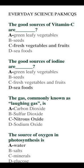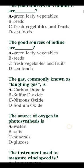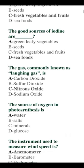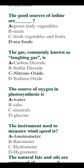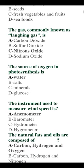Good sources of iodine are seafoods. The gas commonly known as the laughing gas is nitrous oxide (N2O). The source of oxygen in photosynthesis is water. The instrument used to measure wind speed is the anemometer.